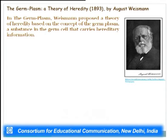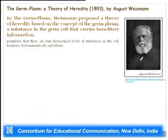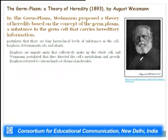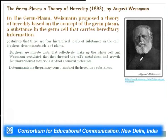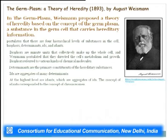The germplasm theory was a theory of heredity proposed by August Weismann. In his book 'The Germplasm Theory of Heredity' (1893), Weismann proposed four hierarchical levels of substances in the cell: biophores, determinants, ids, and idants. Biophores are minute units directing cell metabolism and growth; determinants are the primary constituents of the hereditary substance; aggregates of determinants form ids, and aggregates of ids form idants, corresponding to chromosomes.